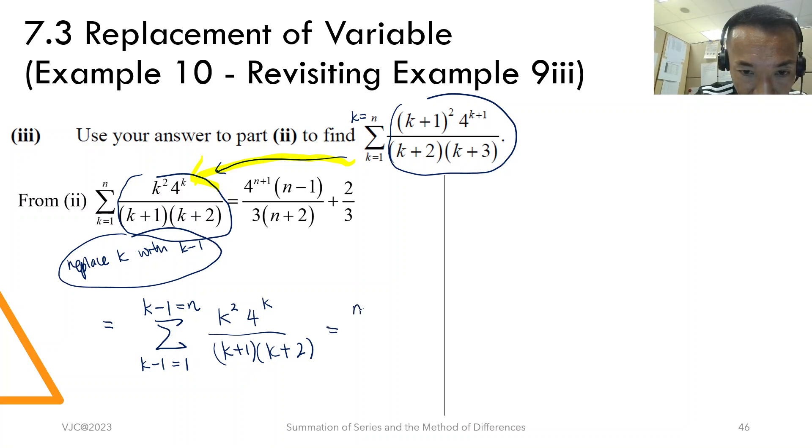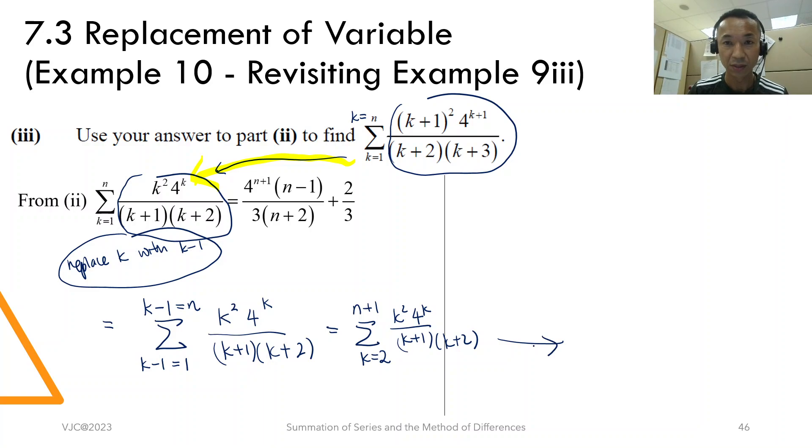It's just n plus 1, k equals to 2, k minus 2, 4k over k plus 1, k plus 2. Now from this point onwards, it's the same as example 9 part 3. It's exactly the same.